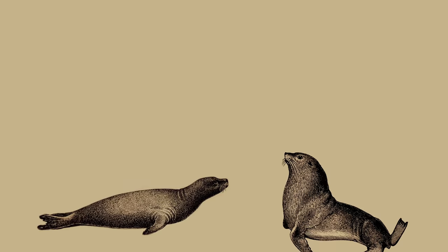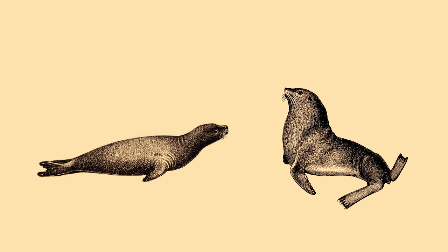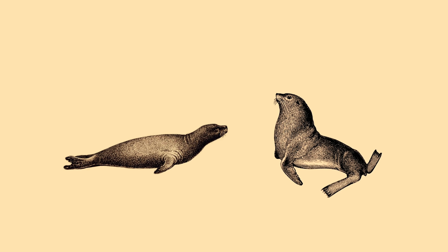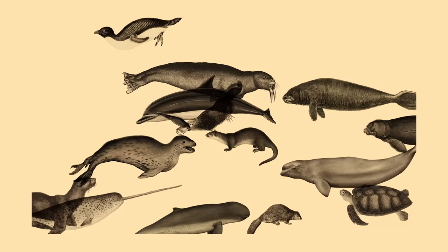Seals and sea lions are often confused. To tell them apart, you need to know what to look for. Seals and sea lions are both technically seals, in the same way that peaches and spam are both technically food. Most people wouldn't use the word to refer to both. So to identify a seal, we need to know what we mean by seal.